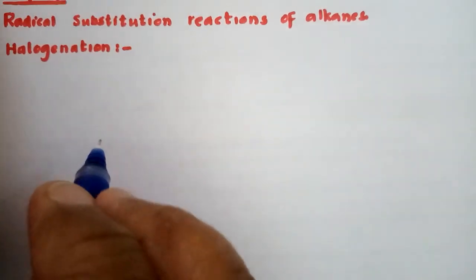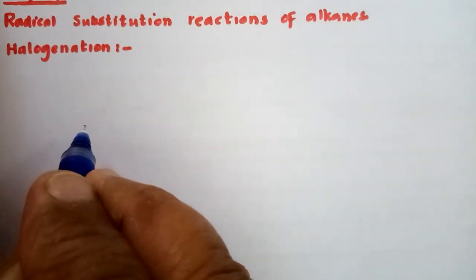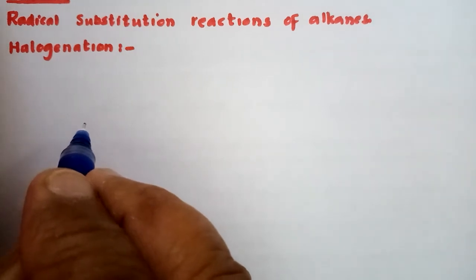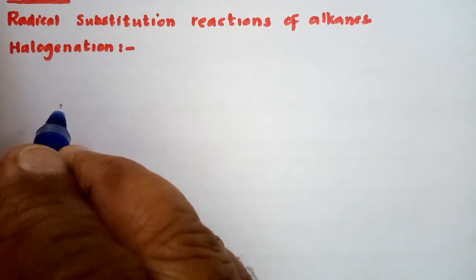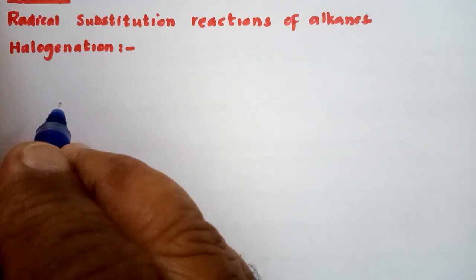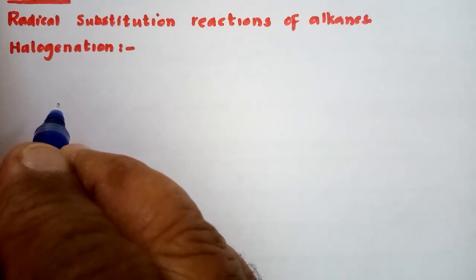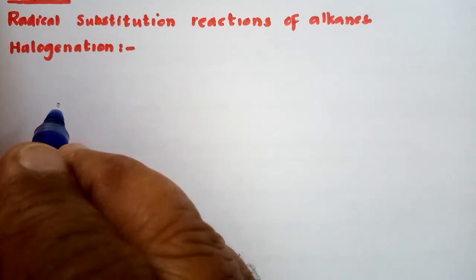Bismillah ar-Rahman ar-Rahim. Students, our topic is Radical Substitution Reactions of the Alkanes. Substitution reactions are those in which one or more hydrogen atoms of an alkane are replaced or substituted by some other atom or group of atoms. Those substitution reactions which take place by free radical mechanisms are known as Radical Substitution Reactions.